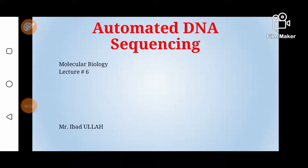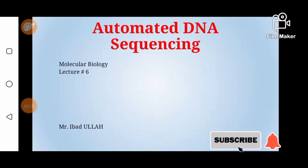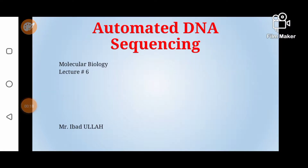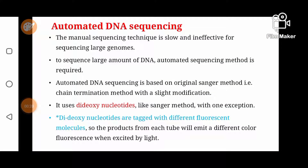Welcome friends. This video is about automated DNA sequencing. In the previous lecture we discussed the Sanger method of DNA sequencing, also known as the dideoxy method or chain termination method. The Sanger method is the very basic method of DNA sequencing and is efficient only for small DNA fragments.